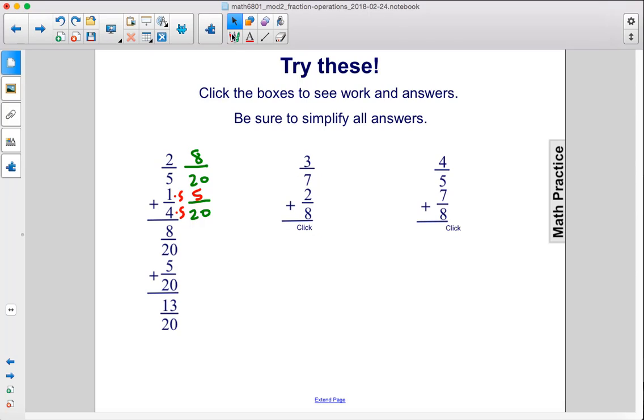All right, over here, we have 3/7 + 2/8. So 7 × 8 is 56. So we have 56 for the denominator up here, 56 here. Here, in order to get 56, you multiply 7 by 8. So if you multiply the top by 8, you get 24. Here, we had to multiply 8 by 7 to get 56. So you multiply 2 by 7, you get 14.